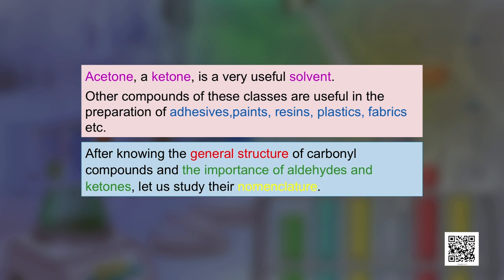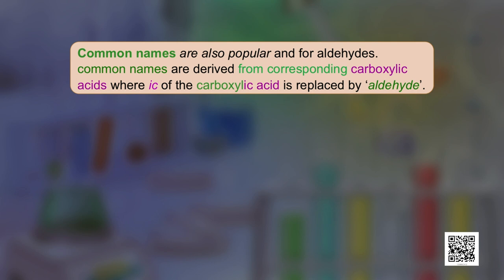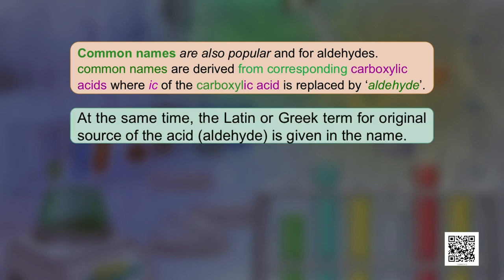After knowing the general structure of carbonyl compounds and the importance of aldehydes and ketones, let us now study their nomenclature. There are two systems: common names and IUPAC names. The common names are very popular for aldehydes and are derived from the corresponding carboxylic acids, where the '-ic' of the carboxylic acid is replaced by the word 'aldehyde'. At the same time, the Latin or Greek term for the original source of the acid is also given in the name.